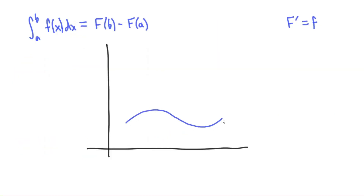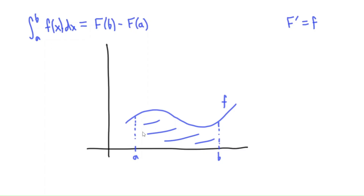I'm going to draw a function f, and just to keep things simple, we're going to assume we have a positive function here, so its graph lies above the x-axis. We'll go from a to b and draw the region below the curve between a and b — the area of this region is what we mean by this integral. Now we're going to begin by drawing an antiderivative of f. Since f is a positive function, the antiderivative should be an increasing function. So let's draw an increasing function — this is what we're calling capital F.